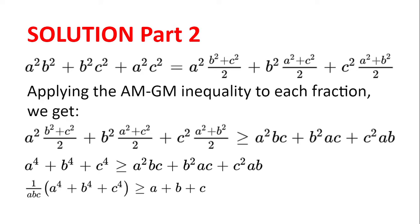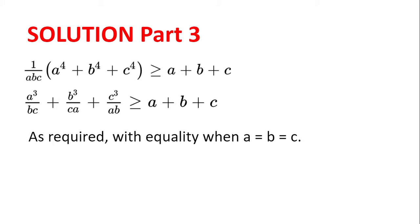Going back, we recall that A to the power of 4 plus B to the power of 4 plus C to the power of 4 is greater than or equal to A²BC plus B²AC plus C²AB, and so 1 divided by ABC multiplied by A⁴ plus B⁴ plus C⁴ is greater than or equal to A plus B plus C. Since we rewrote A cubed divided by BC plus B cubed divided by CA plus C cubed divided by AB as 1 over ABC times A⁴ plus B⁴ plus C⁴, we conclude that A³/BC plus B³/CA plus C³/AB is greater than or equal to A plus B plus C, as required, with equality when A equals B equals C.